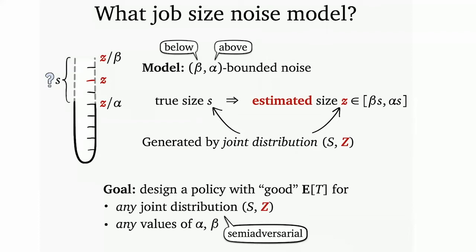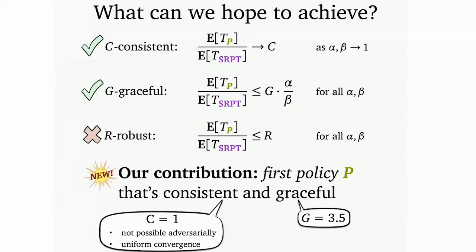We want a policy that has good expected waiting time — or time in the system — for any joint distribution that is beta-alpha bounded, and that works for any values of alpha and beta. This is not a fully adversarial model where the adversary picks the size, but they do get to pick the underlying noise distribution subject to it being bounded.